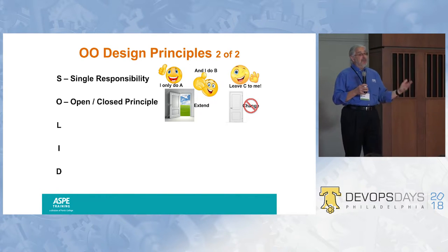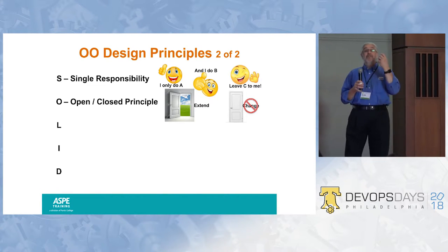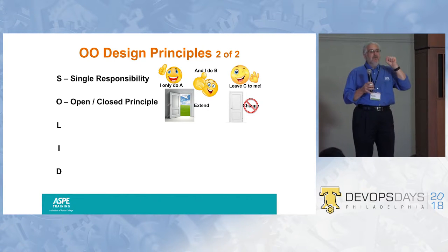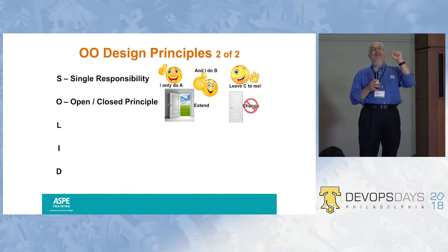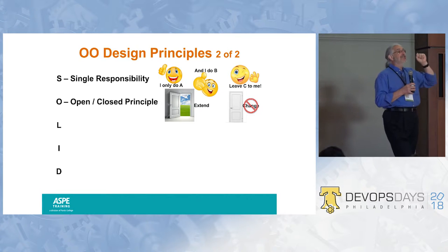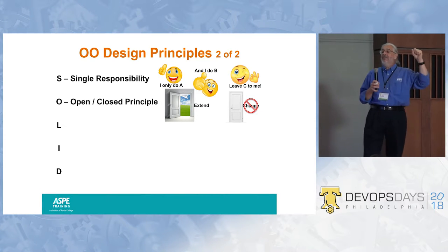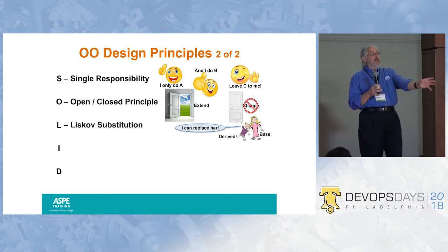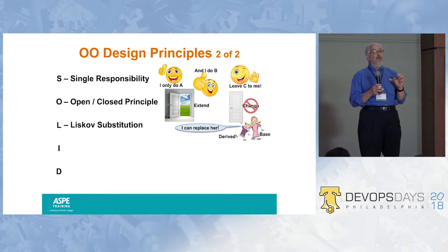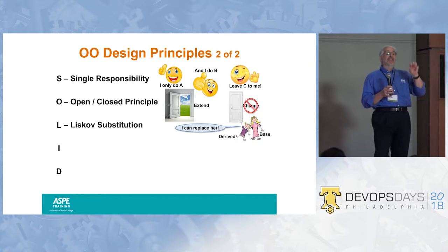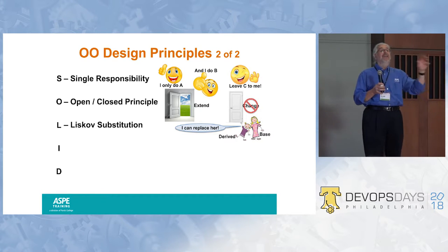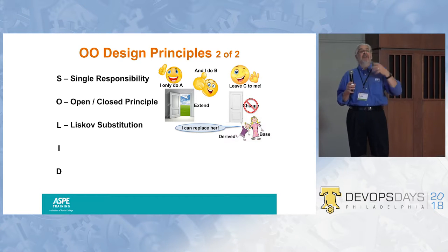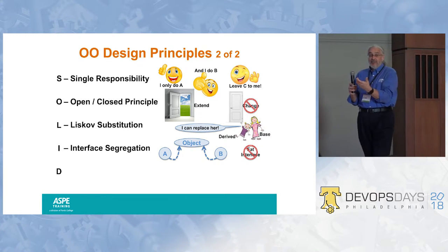The O is the open-closed principle: services are open to being extended, but they're closed to change. The reason they need to be closed to change is so that we don't screw up their relationship with other services. That gives rise to Liskov substitution: if I'm going to derive a new version of a service from an old one, that new version has to be substitutable for the old one — so we don't mess up those relationships among services, allowing us to actually make the changes we need.